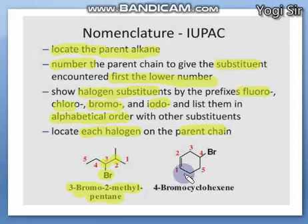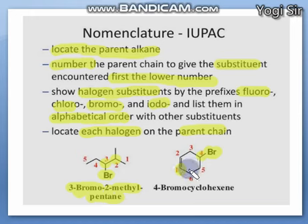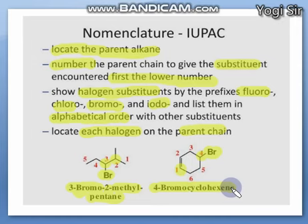For alicyclic compounds, we number the first carbon because according to the priority series the double bond is more reactive than halogens, so we give priority to the double bond. This is first carbon, second, third, and fourth carbon. Here bromine is on the fourth carbon and the compound is cyclohexene, so we name it as 4-bromocyclohexene.